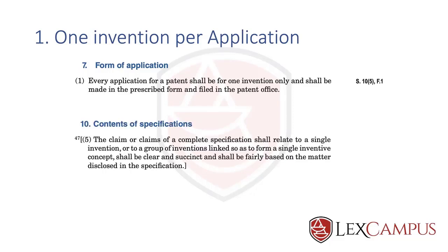Section 10.5 mentions that the claim or claims of a complete specification shall relate to a single invention or to a group of inventions linked so as to form a single inventive concept. When there is more than one invention or more than one single inventive concept, either by the controller asking the applicant to split the claims, or voluntarily by the applicant, a divisional application can be filed to split the claims into the respective number of inventions.